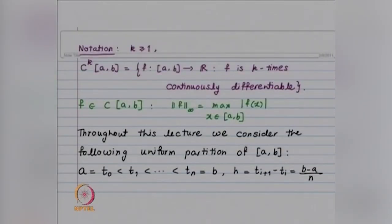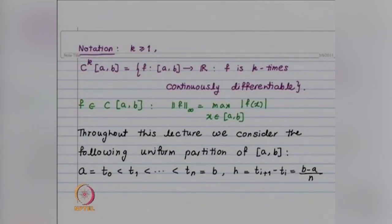Let me introduce the notation we are going to use. For k greater than or equal to 1, C^k(a,b) consists of functions which are k times continuously differentiable on interval a to b. This is a vector space. For a continuous function we have already defined the maximum norm, which is the maximum of |f(x)| for x in [a,b]. Throughout this lecture we consider the uniform partition: a = t_0 < t_1 < ... < t_n = b, where t_{i+1} - t_i = h = (b-a)/n for i = 0, 1, ..., n-1.